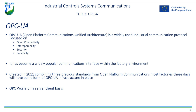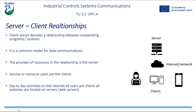It uses a client-server model where the client requests data from the server, which responds to the requested data. It has become a widely popular communications interface within the factory environment, and the new OPC UA was created in 2011 combining the previous standards. There is a server-client relationship implemented within OPC UA — a common model for data communications familiar to anyone who has used the internet, where a client accesses data on a server every time they go to a web page. The provider of all the resources within the OPC UA client-server relationship is the server itself, and clients are those utilizing the service or resource the server provides.